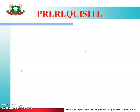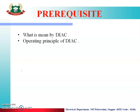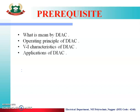The topics studied in the previous sessions are: what is meant by DIAC, the operating principle of DIAC, the VI characteristics of DIAC, and the applications of DIAC. The main application of DIAC is its use to trigger a TRIAC, which is what we are studying in this class.